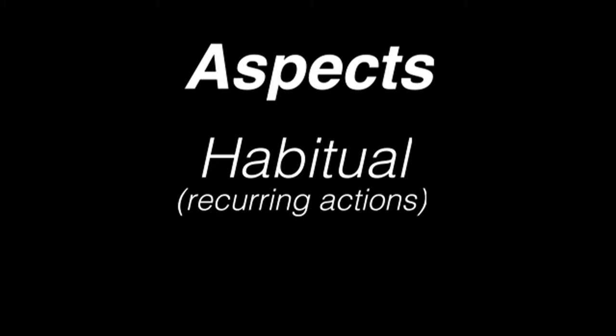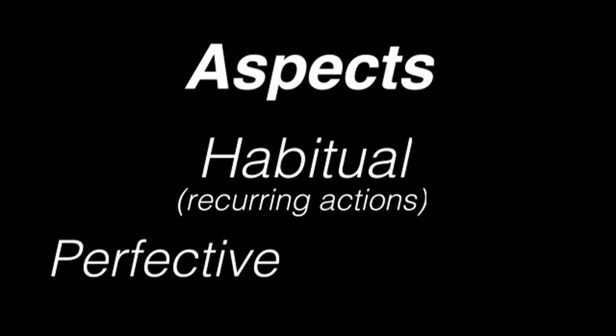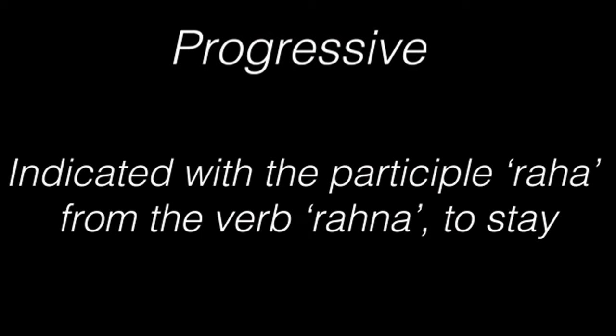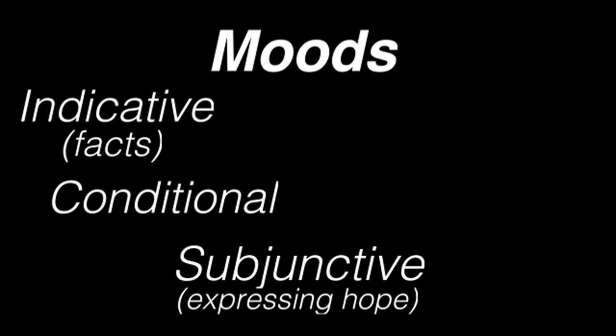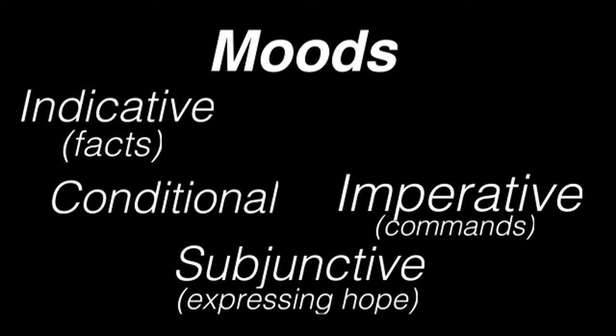Moving on from nouns, let's talk about verbs. Verbs have three aspects: the habitual, which implies an action is recurring; the perfective; and the progressive, implying an action is ongoing. The continuous aspect form is indicated using the participle rha from the verb rehna, meaning to stay. There are also five moods: the indicative used for stating fact, the conditional, the subjunctive, the imperative, and the presumptive, used to express hypothesis.